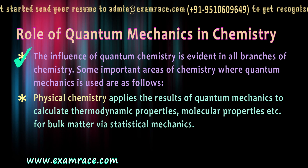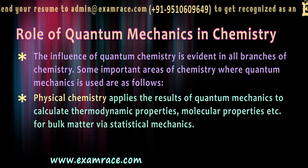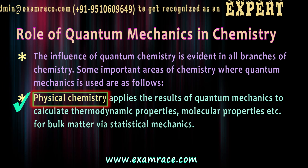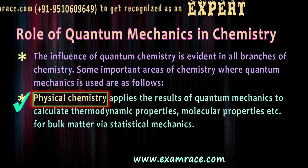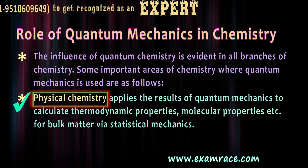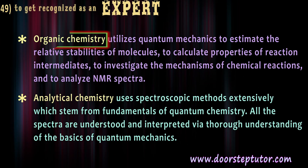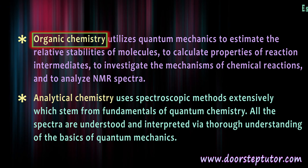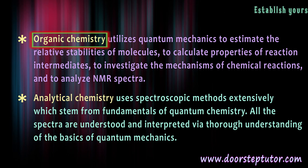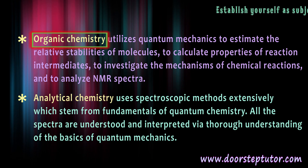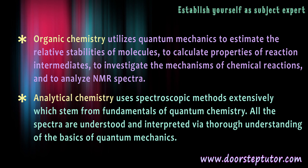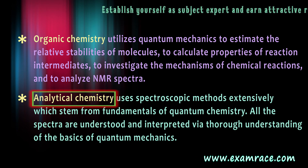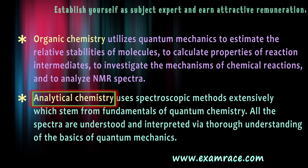Some important areas of chemistry where Quantum Mechanics is used are as follows. Physical Chemistry applies the results of Quantum Mechanics to calculate thermodynamic properties, molecular properties, all for bulk matter via statistical mechanics. Organic Chemistry uses quantum mechanics to estimate the relative stability of molecules, to calculate properties of reaction intermediaries, to investigate the mechanism of chemical reaction, and to analyze NMR spectra. Similarly, Analytical Chemistry also uses quantum mechanics, using spectroscopic methods extensively, which stems from fundamentals of Quantum Chemistry.